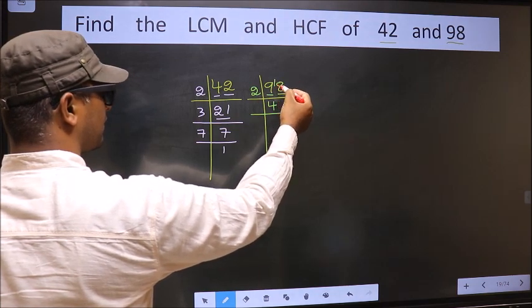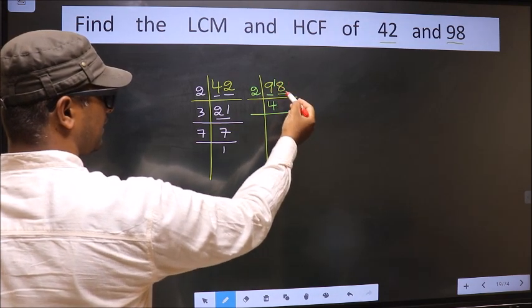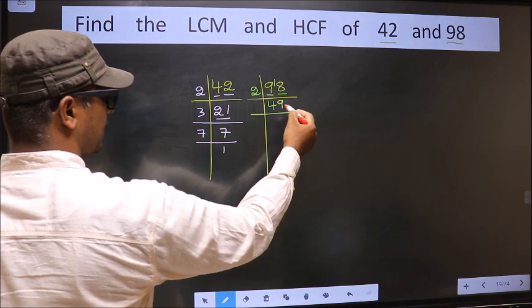9 minus 8 is 1, 1 carried forward making it 18. When do we get 18 in 2 table? 2 times 9 is 18.